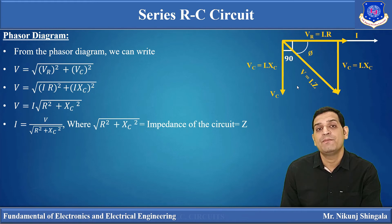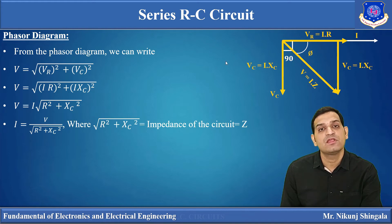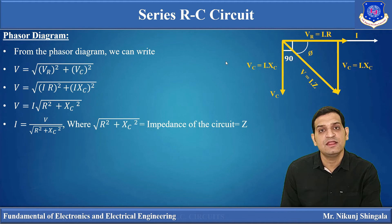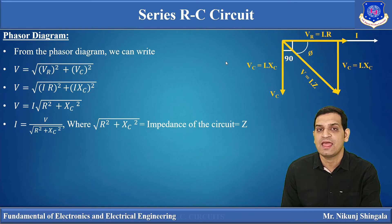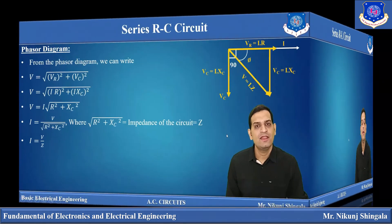The impedance for the series RC circuit is Z = √(R² + XC²). Compare this to the impedance for the series RL circuit from the previous lecture, which was Z = √(R² + XL²). We can now write I = V / Z.